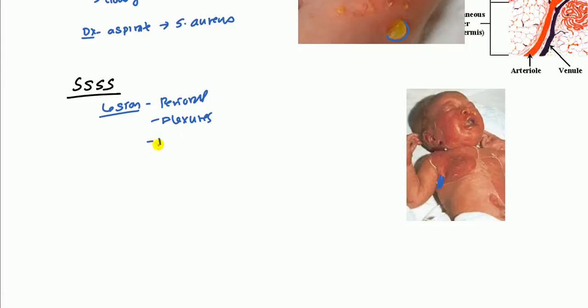It is very tender. So when you touch it, it does hurt. It's going to be Nikolsky sign positive. Nikolsky sign is pretty much it means that if you were to rub like some area right here, the skin would come off just with a gentle rub. And you can get large sheets coming off.